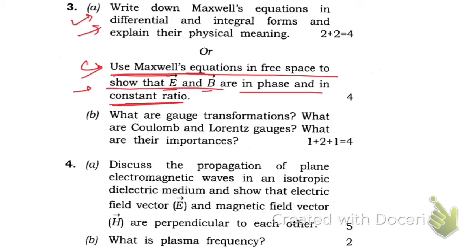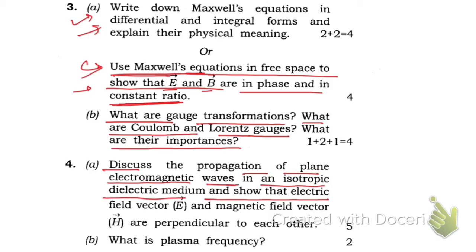Next question 3b: What are gauge transformations? What are Coulomb and Lorentz gauges and what are their importances? Question 4a: Discuss the propagation of plane electromagnetic waves in an isotropic dielectric medium and show that electric field vector E and magnetic field vector H are perpendicular to each other.